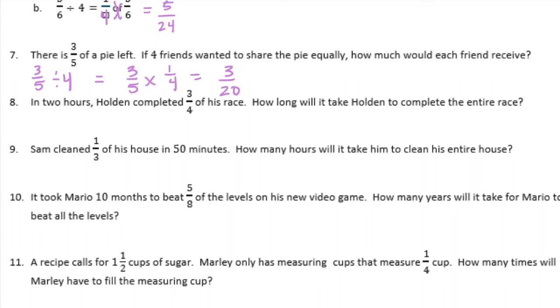Number 8: In 2 hours, Holden completed 3 fourths of his race. How long will it take Holden to complete the entire race? So in 2 hours, it took him 3 fourths. He had completed 3 fourths of the race. So we have 8 fourths. I took 2 and I made it into 8 fourths so that we would have a common denominator.